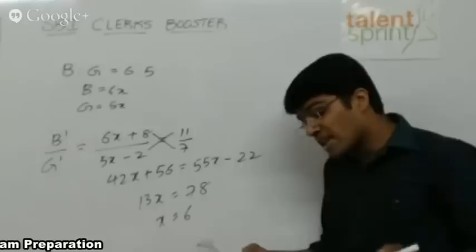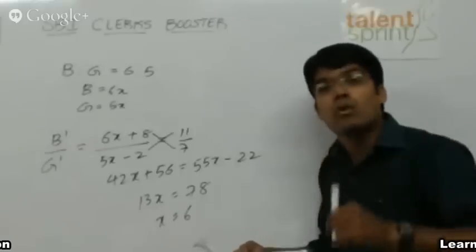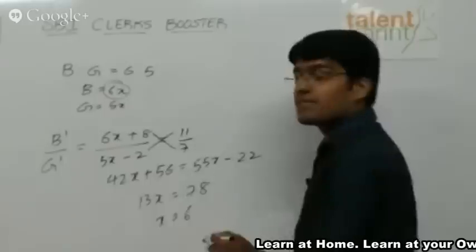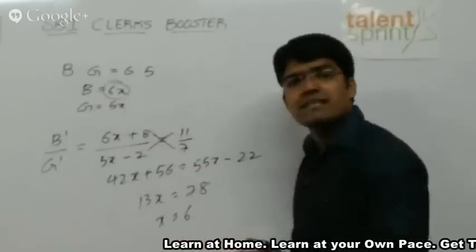What is the question? What is the number of boys in the class now? What is the original number of boys? 6x. 6 into x, 6 into 6, 36.